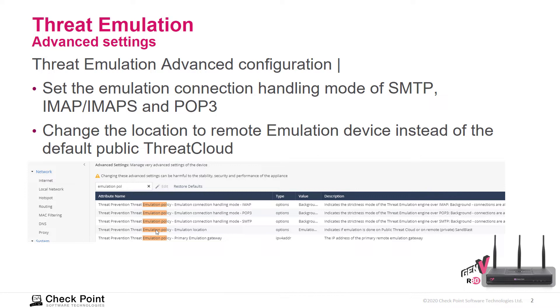We can set the Emulation Connection Handling Mode for SMTP, IMAP, IMAP Secure, and POP3. We can also change the location to a Remote Emulation Device instead of the default public Threat Cloud.